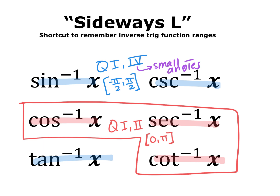Our mnemonic to remember which inverse trig functions have which ranges is the sideways L. Write out your six trig functions in order and draw a sideways L. The ones inside — cosine inverse, secant inverse, and cotangent inverse — are more cosine-based and give outputs in quadrants 1 and 2, meaning angle measurements between 0 and pi. Cotangent inverse does not include 0 and pi. The ones outside — sine inverse, tangent inverse, and cosecant inverse — are more sine-based and give answers in quadrants 1 and 4, meaning negative pi over 2 to pi over 2. Fourth-quadrant answers are labeled as small negative angles.